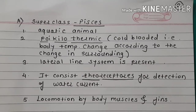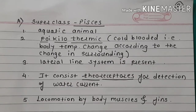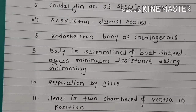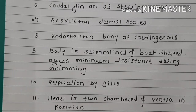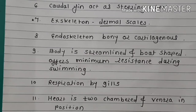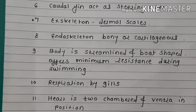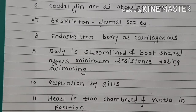The lateral line system consists of rare receptors for detection of water current. Locomotion is by body muscle and fins. The caudal fin acts as a steering wheel. Exoskeleton is in the form of dermal scales. Endoskeleton is bony or cartilaginous.